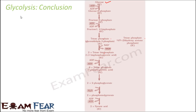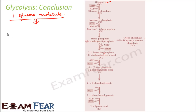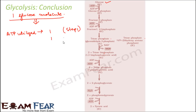So now looking at the entire process of glycolysis, let us see what all has been produced. One glucose molecule was the starting material. How many ATP were utilized throughout the process? One ATP was utilized in step 1, and again one ATP was utilized in step 3. So total, 2 ATP molecules were utilized.